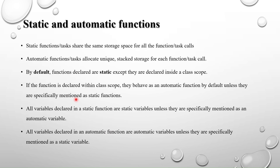Static functions or tasks share the same storage space for all calls. Inside a static function, variables are stored in one memory location — every call overrides the same variable. In automatic functions or tasks, unique separate stack storage memory is allocated for each function call, meaning the variable is not overridden; a new memory location is used each time.